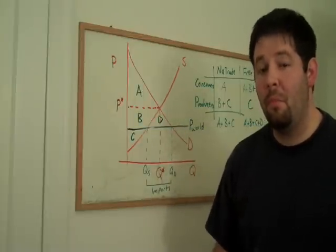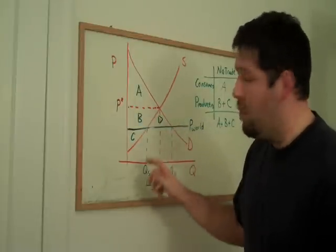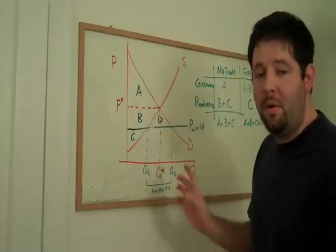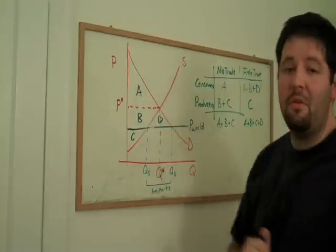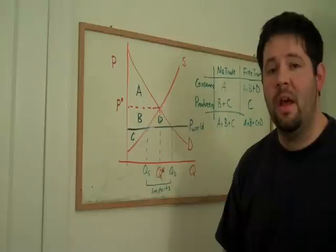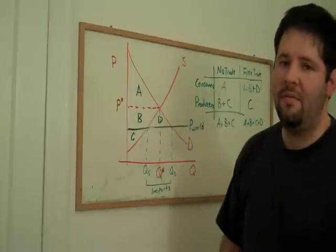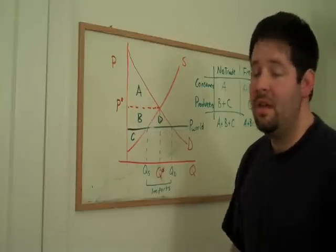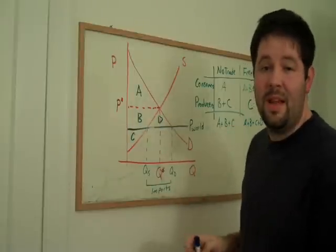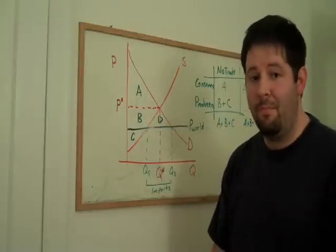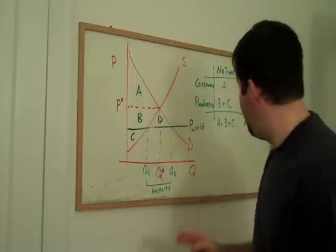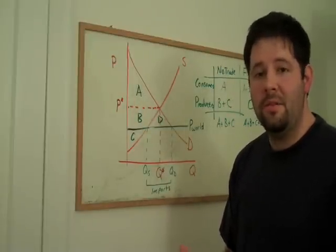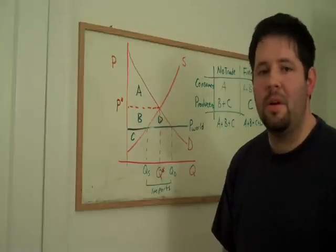This raises an important point. Even though more consumer surplus is provided by this policy than producer surplus is lost, the producers have a reason to oppose it. And if there are very few producers and not very many consumers, these producers may vehemently oppose it. So we can really get a sense from this diagram not only that free trade is better for us on average, but also that free trade hurts some people, and those people have an incentive to ask for protection.